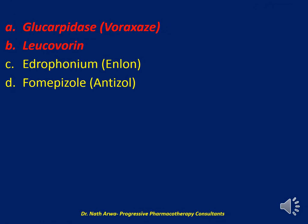Both A and B are correct — administer both glucarpidase and leucovorin. Glucarpidase, marketed as Voraxaze, and leucovorin are treatment options for methotrexate toxicity. Edrophonium, marketed as Enlon, is a cholinesterase inhibitor used as an antidote for neuromuscular blocker toxicity, so it has no role here.